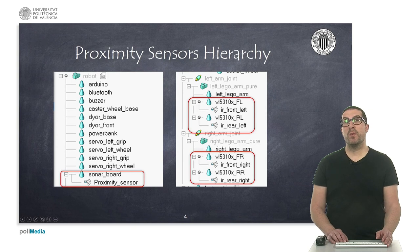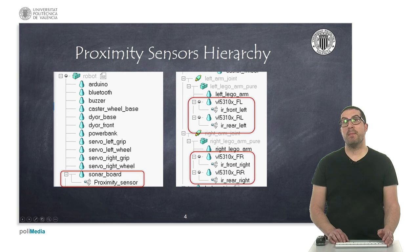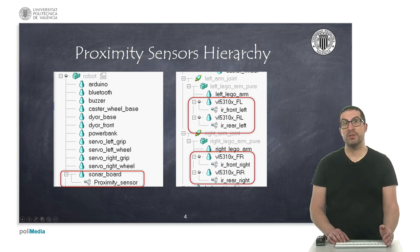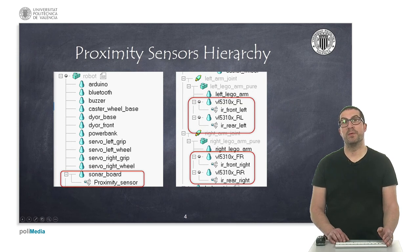Remember that if we want the sensors to move as the robot moves, then they must be children of the robot. The most convenient hierarchy in this case is where the sensors are children of the imported mesh, and at the same time these objects are children of the robot arms, as shown.